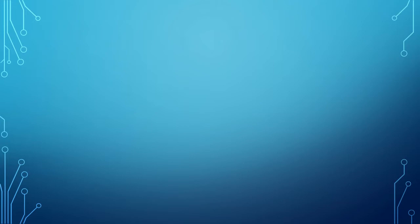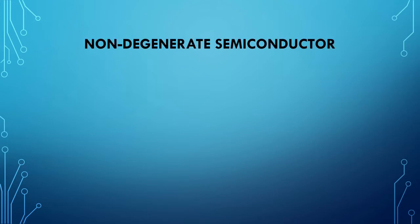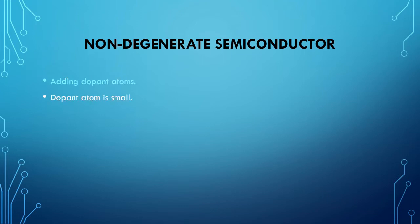Today I will talk about the next important topic of semiconductor physics and devices, that is non-degenerate semiconductor. What is non-degenerate semiconductor? If we add dopant atoms to a semiconductor, we assume that the concentration of dopant atoms added is small when compared to the density of host or semiconductor atoms. It means a small number of impurity atoms are spread throughout the device.